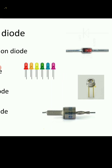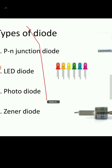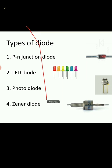LED is a two-terminal device having two leads of different color. We use it for the blinking of light — when you give the power supply, there will be emission of light. Photo diode works exactly opposite with respect to the LED. LED emits the light; what will the photo diode do? It takes the light. LED and photo diode work exactly opposite to each other.